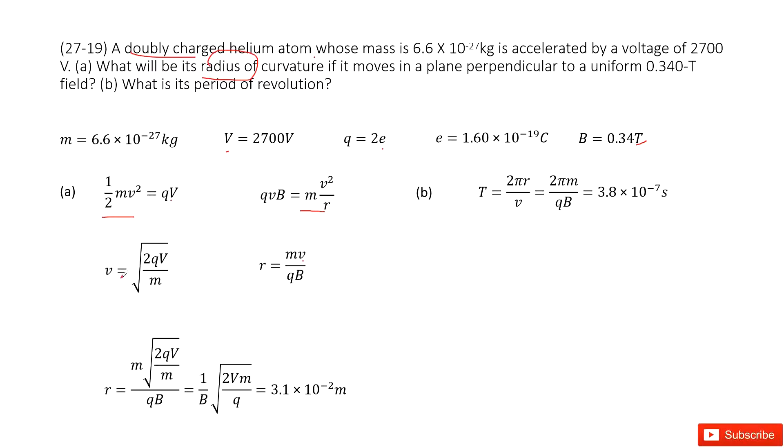From this equation, we can solve for v as square root of 2qV divided by mass. Input this v inside, you get the function. Simplified, you get r in this function. Input all the given quantities, you get the answer there.